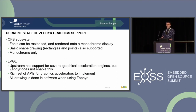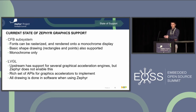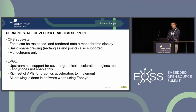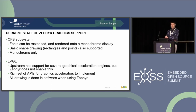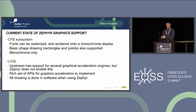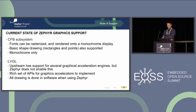LVGL is where we typically go for more advanced displays — multicolor displays, though you can use it with monochrome as well. Upstream LVGL does have support for several graphics acceleration engines, but Zephyr currently doesn't enable this. I believe we're on 8.2 in our module revision and upstream is 8.3.7 or so, but the Zephyr enablement doesn't have any of those graphics accelerators ported over. Right now we're doing all drawing in software with Zephyr.